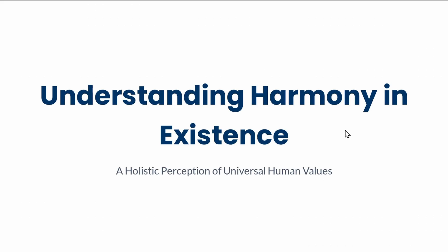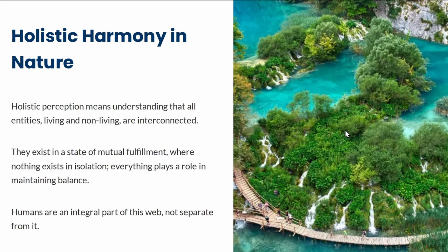When we talk about harmony in existence, we must talk about harmony in nature. Harmony in nature means realizing that all living and non-living entities coexist in balance and mutual fulfillment. Living entities include humans, animals, flora, fauna, wildlife, and aquatic wildlife. Non-living entities include beaches, mountains, soil, water, and land resources. Both coexist in balance and mutual fulfillment.